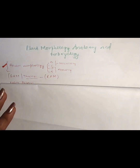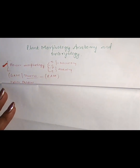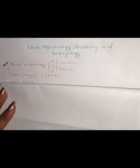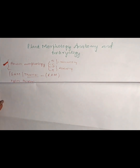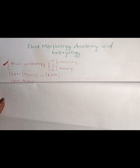The second topic that you have to prepare is theories. You have to prepare theories for shoot apical meristem (SAM) and root apical meristem (RAM). You will hear two theories — this is the origin of these theories.